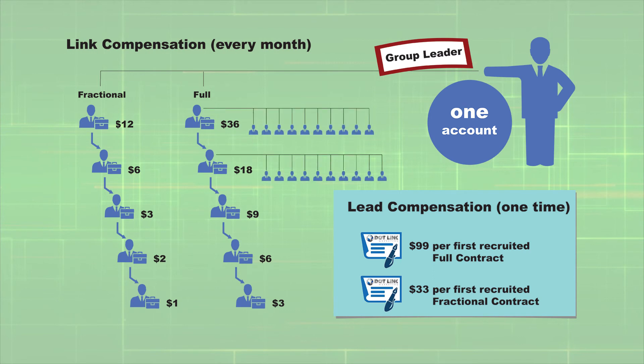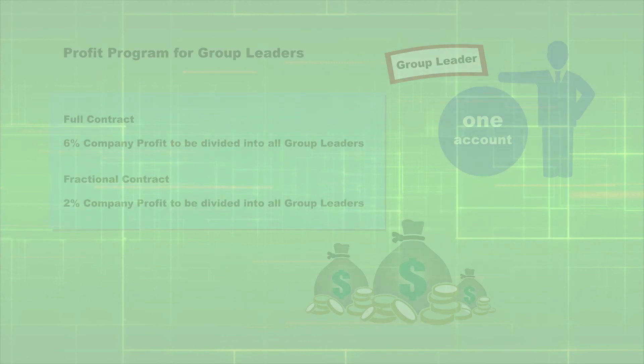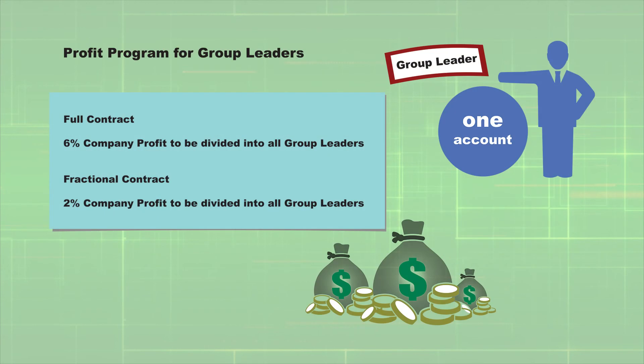If you have 11 contracts, the maximum number of direct recruits you can have on your main contract's second level is 100. We also pay a profit program for group leaders: six percent of .link Marketing's monthly profit will be divided among all group leaders, and two percent of .link Marketing's monthly profit will be divided among all fractional group leaders.